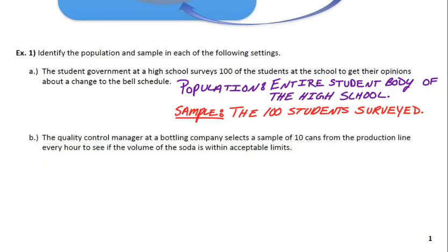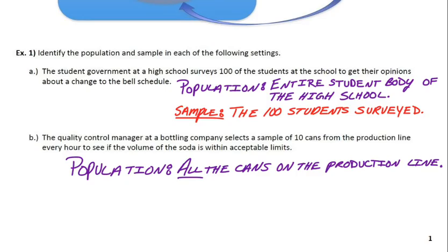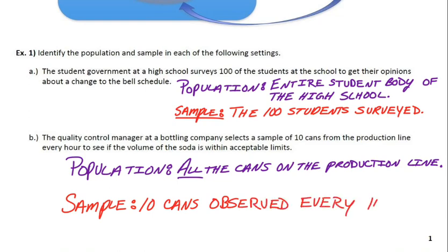So the population in this case, the thing we're trying to get a bigger idea about, would be all of the soda cans produced within that given hour, not just the 10 that were collected. Whereas our sample in this case would be those 10 cans that were actually pulled from the production line and observed.